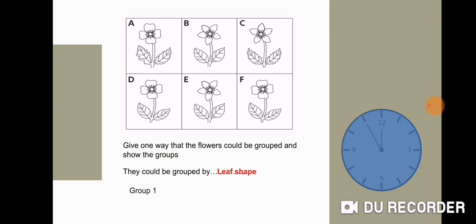So, group one: A and C, because they have the same leaf shape. Look, group two: B, D, E, F, because they have the same leaf shape.